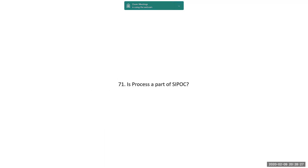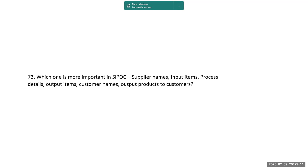Is SIPOC a process template? Yes. Is process a part of SIPOC? Yes — process is also involved in the process chart which is SIPOC. What is the value stream of a process? As the raw material goes and reaches a final product, as and when it changes its shape, quality, and value — what are the processes going in? From which supplier to which department, and where does it come out with a change in its value — that is the value stream. Which is more important in SIPOC? All are important: supplier names, input items, process details, output items, customer names, and output products to customers.